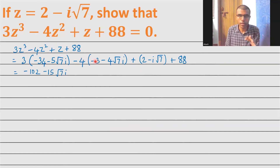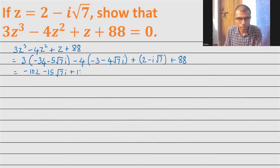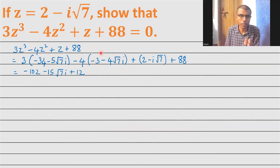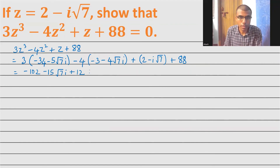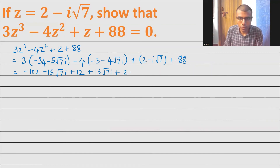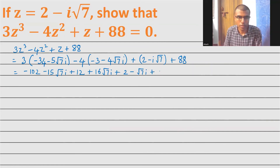-4 × (-3) = +12, and -4 × (-4√7·i) = +16√7·i. Then z = 2 - √7·i (as seen at the top), and the constant is +88.